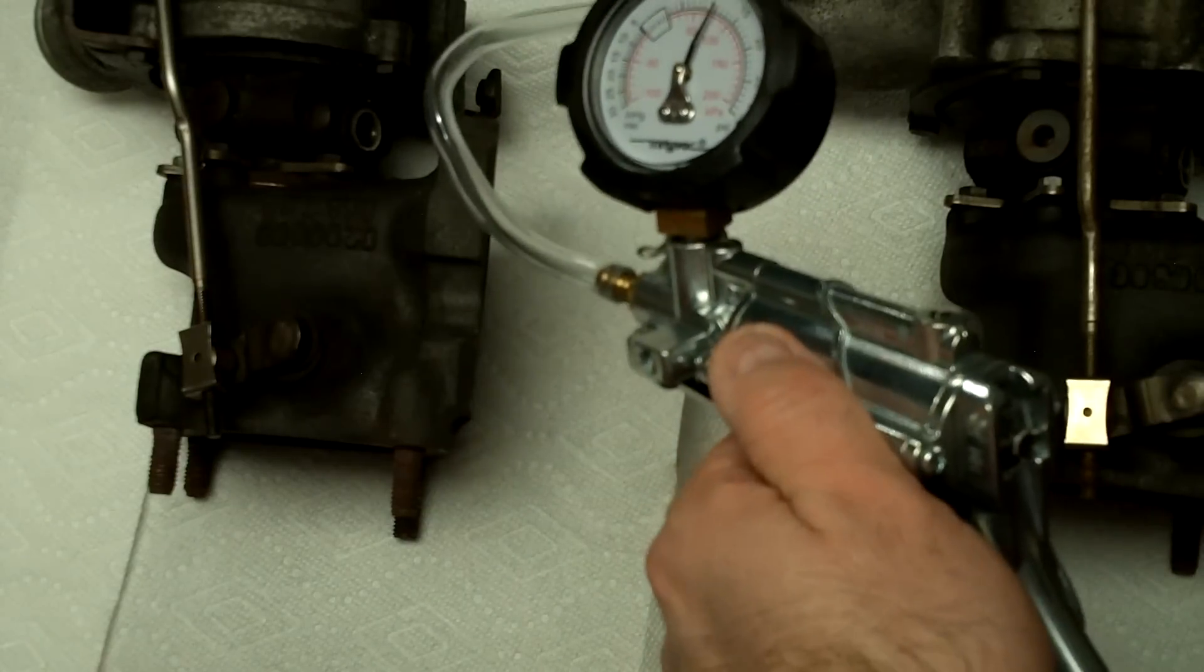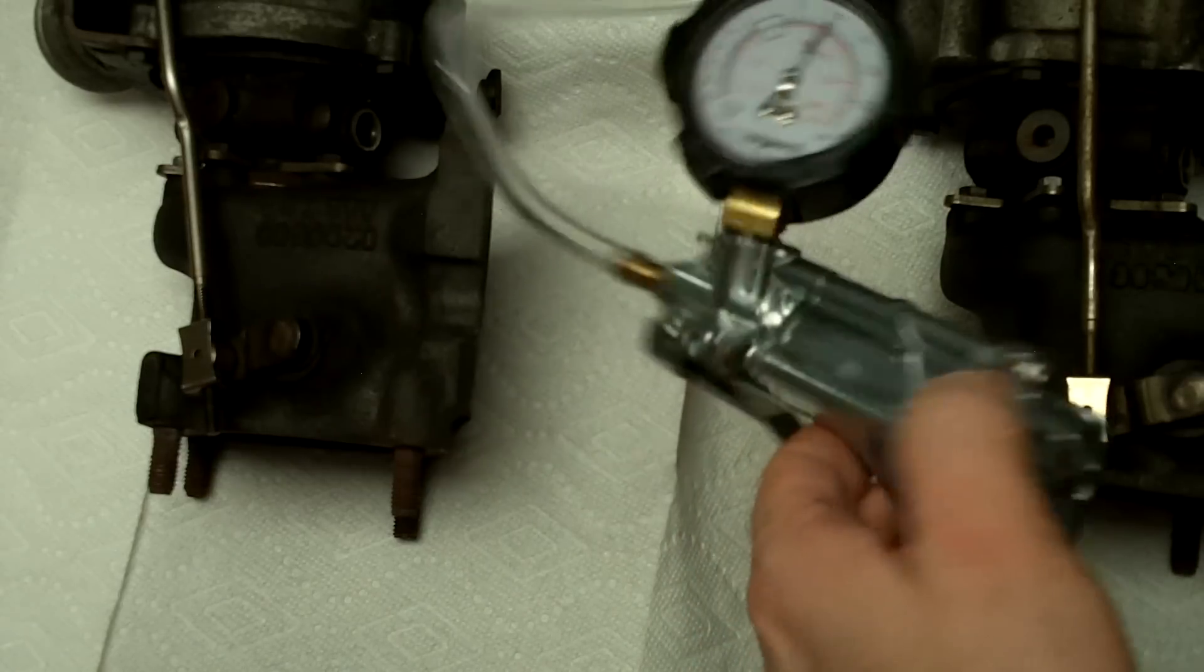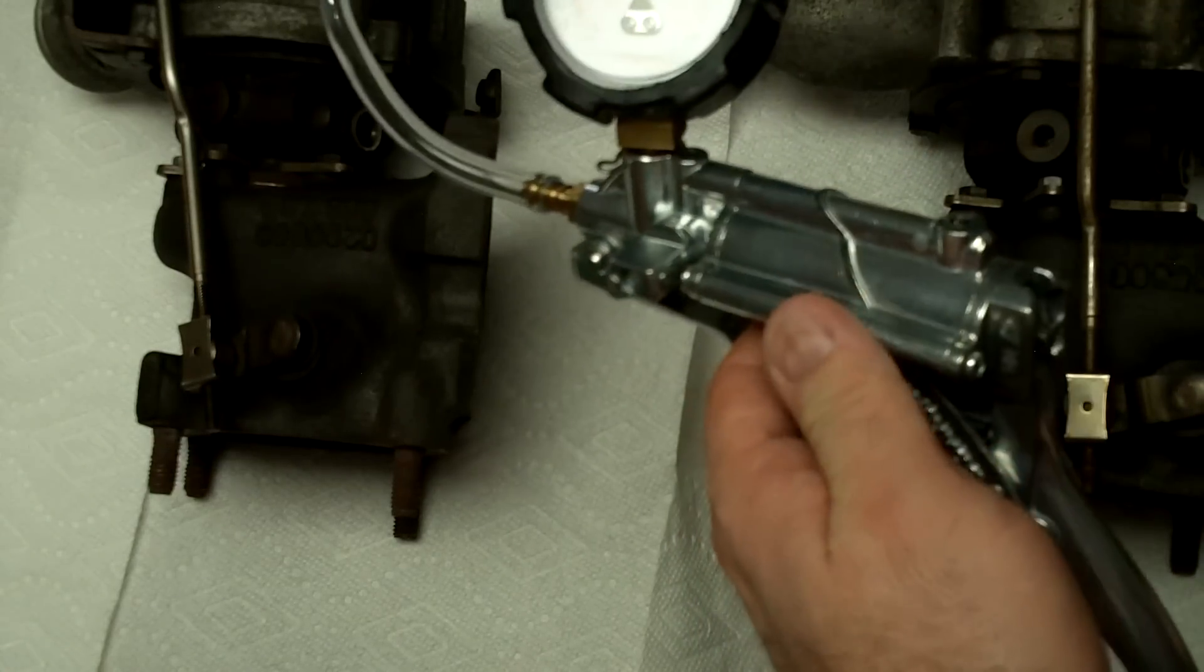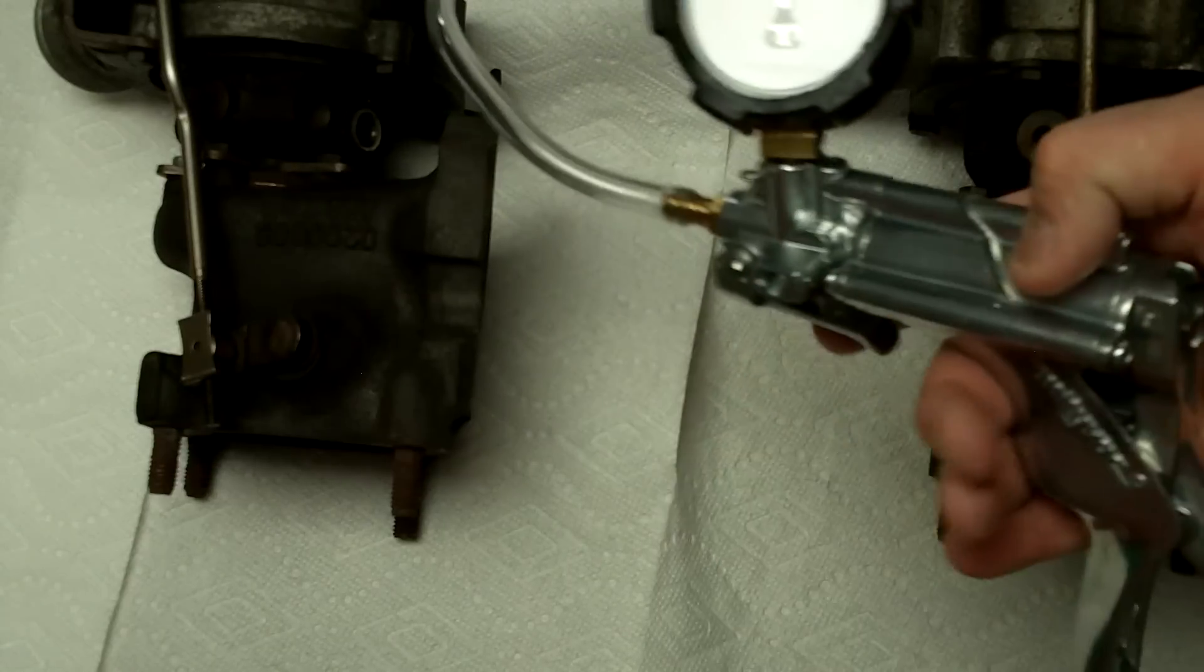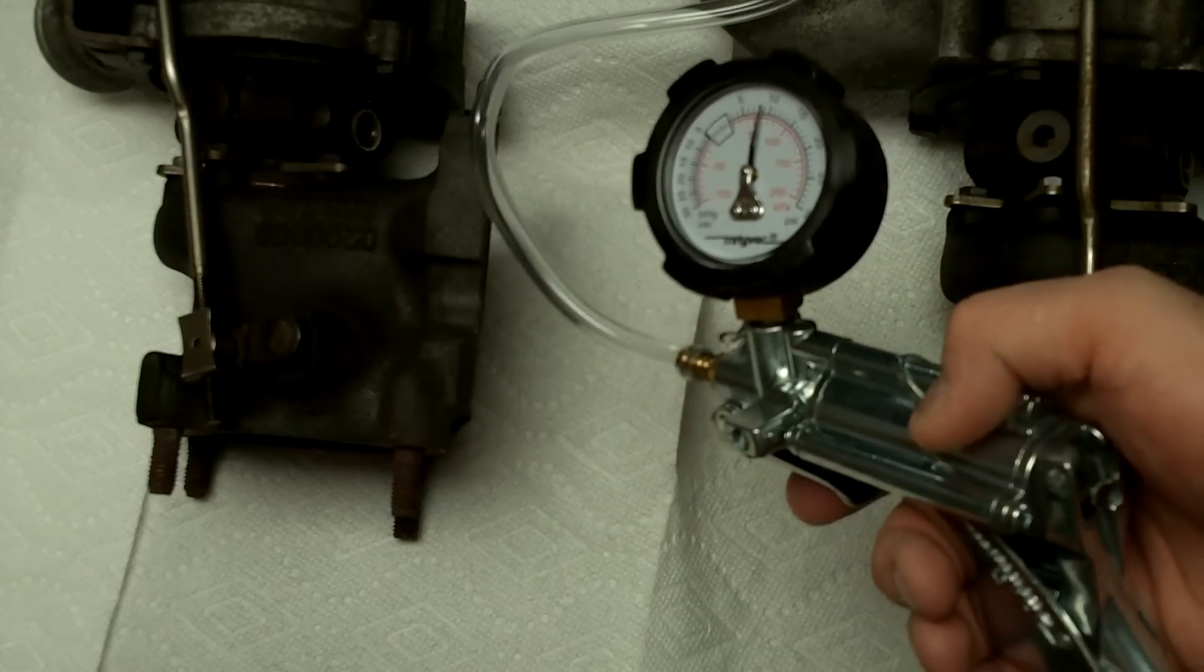So that's how you test your waste gates manually, just using a hand pump. This is the MightyVac MV8510. Don't forget to comment, rate, subscribe and let me know if you have any questions.